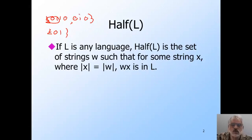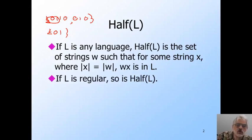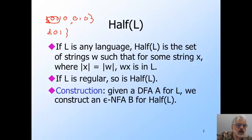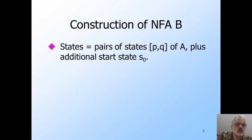We want to prove that if L is regular, then so is half of L. And we're going to start with a DFA called A for L, and we're going to construct an epsilon NFA called B whose language is half of L. So here's how we're going to construct B from A. First, the states of B are pairs of states of A plus an additional state S0, which is the start state of B.